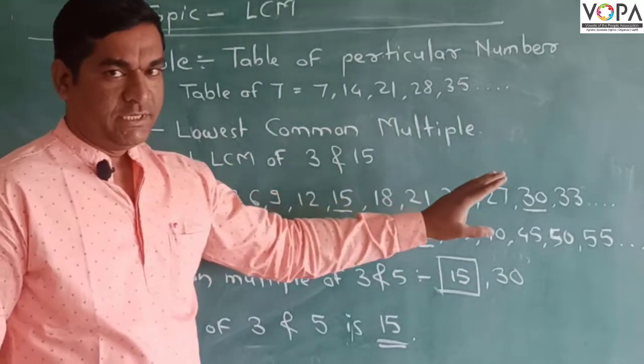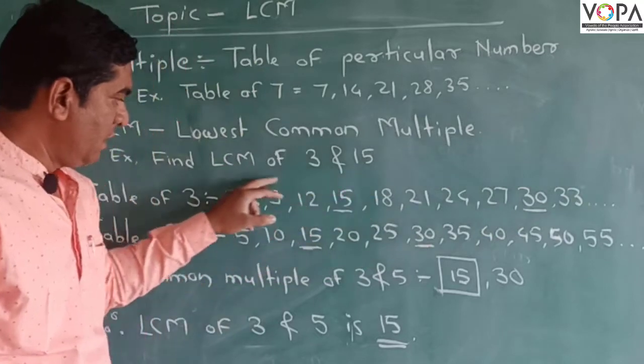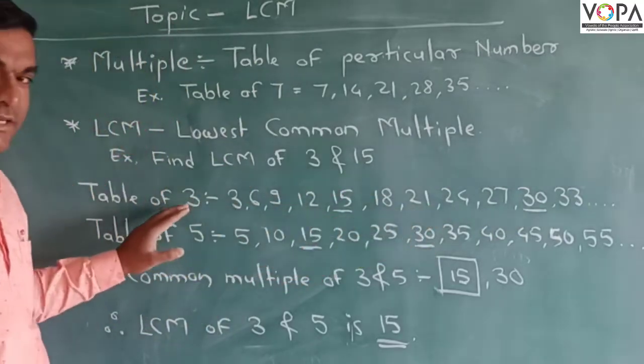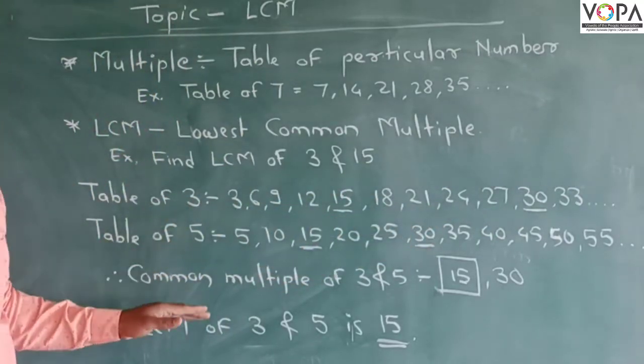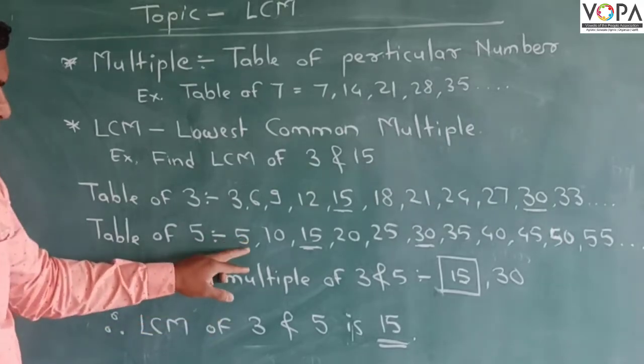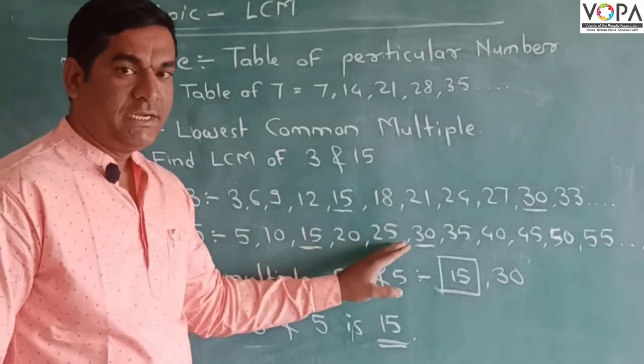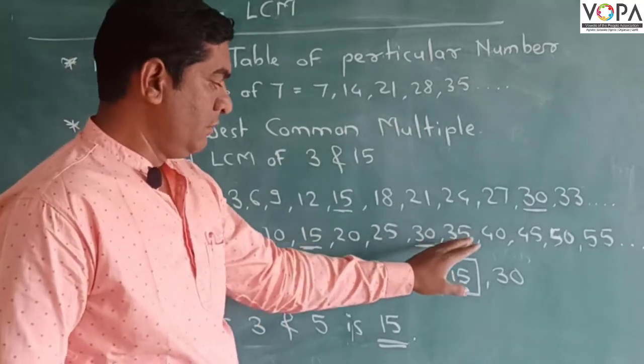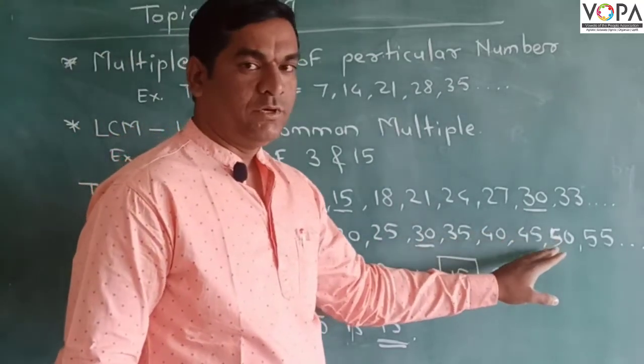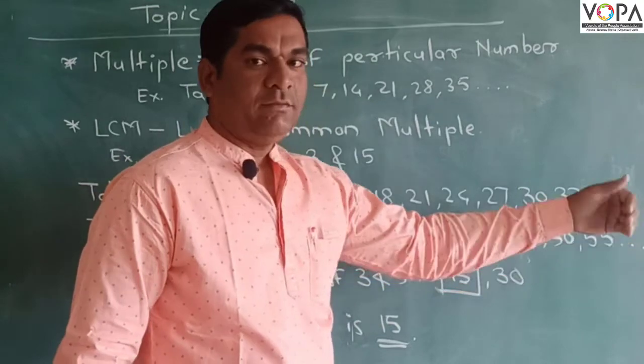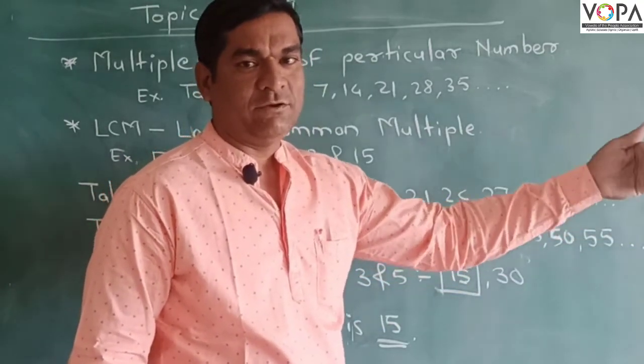Same for the table of 5: 5, 10, 15, 20, 25, 30, 35, 40, 45, 50, 55 and so on, 60, 65, it will continue.